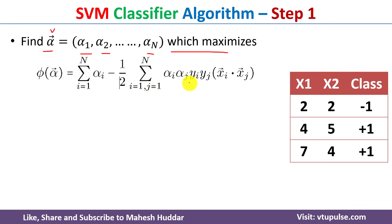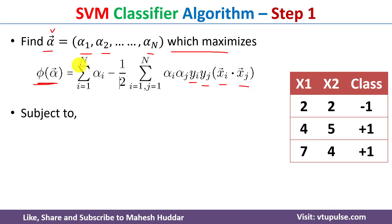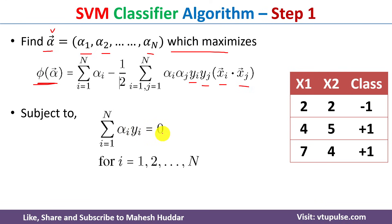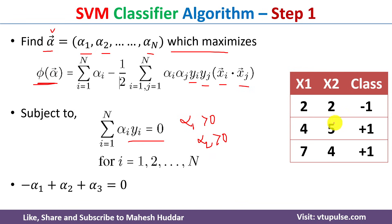There are certain conditions we must follow while calculating the alpha values. The first condition is: summation of alpha_i * y_i = 0, for all i from 1 to N — that is, alpha1*y1 + alpha2*y2 + ... + alphaN*yN = 0. The second condition is that all alpha_i must be greater than 0.